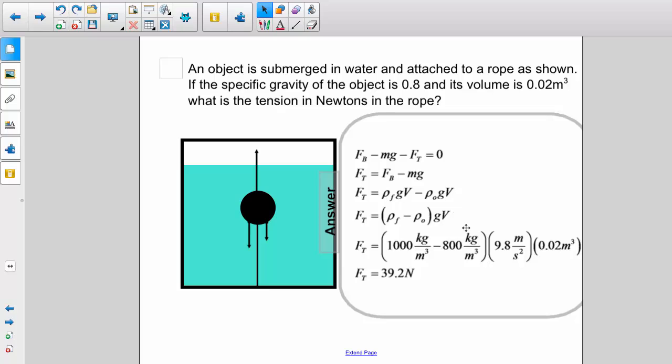Notice g and v are common to both, and we'll factor those out. So the tension is just the difference in the densities multiplied by g and v.